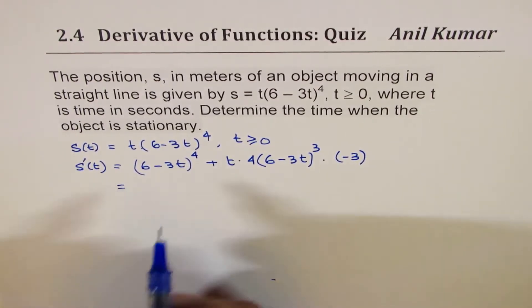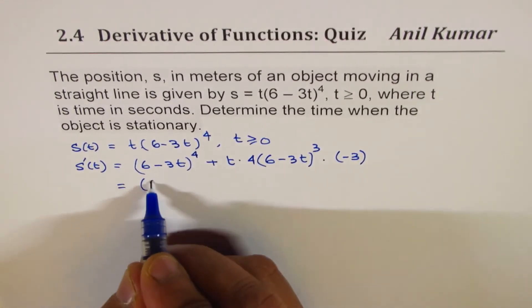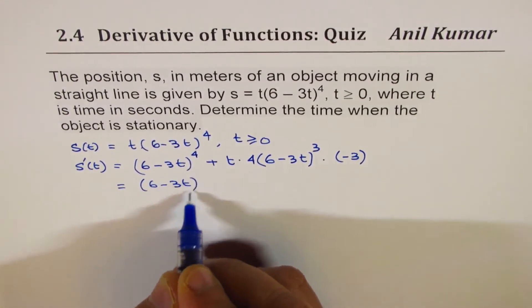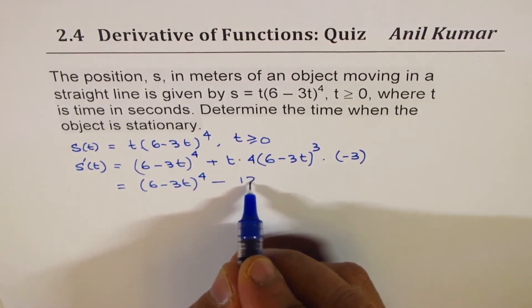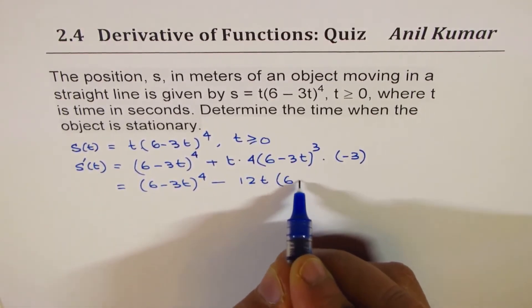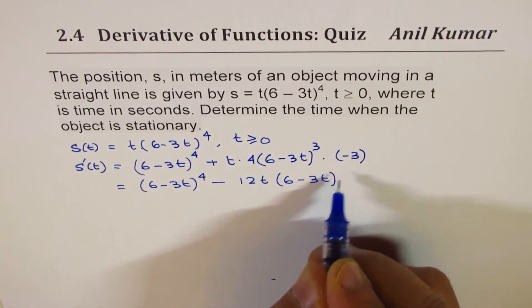Now let's rewrite this: 6 minus 3t to the power of 4 minus 4 times 3 is 12t, 6 minus 3t whole cube.